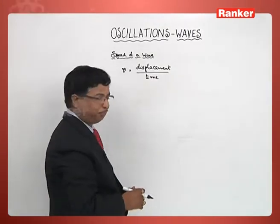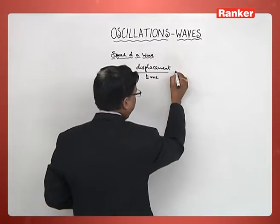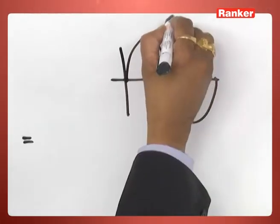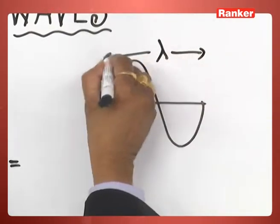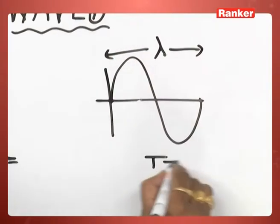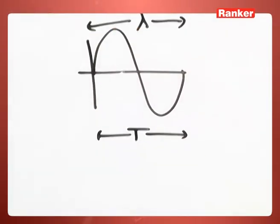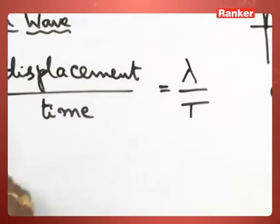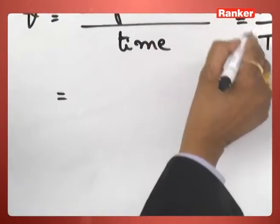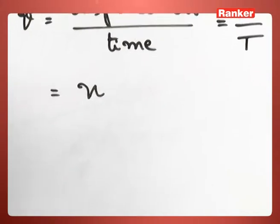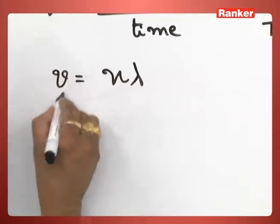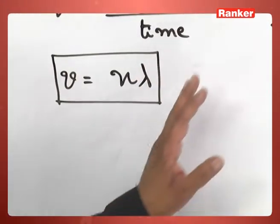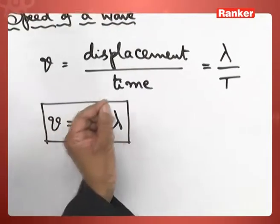Of course, ds by dt we used to write it. Now we can rewrite the same in this case. When I consider a wave like this, its total length is going to be taken as lambda and the time period corresponding to that lambda is called T. Therefore, we can write this as lambda over T. But the reciprocal of time period is frequency. Therefore, we can write v is equal to n lambda. This is actually the equation one has to remember as far as the speed of a wave is concerned.